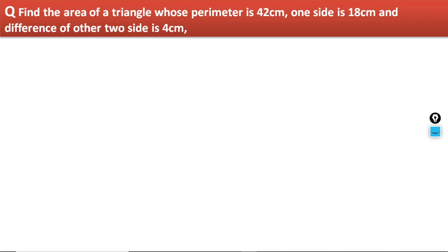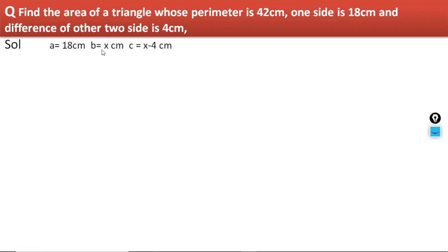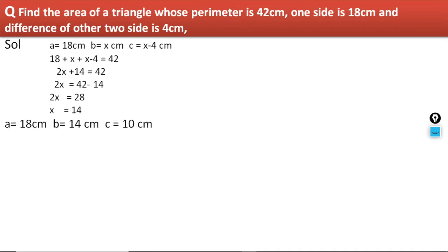Let us try another problem. Find the area of a triangle whose perimeter is 42 centimetres, one side is 18 centimetres, and the difference of the other two sides is 4 centimetres. Let side a = 18. Consider the second side as x and the third as x − 4, since their difference is 4. Using perimeter: 18 + x + (x − 4) = 42, giving x = 14. So the sides are 18, 14 and 10.